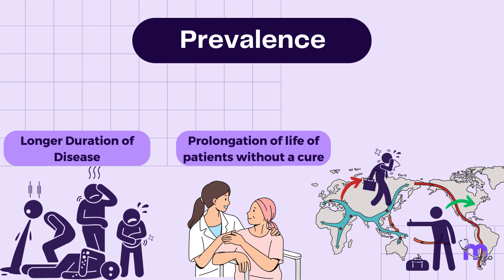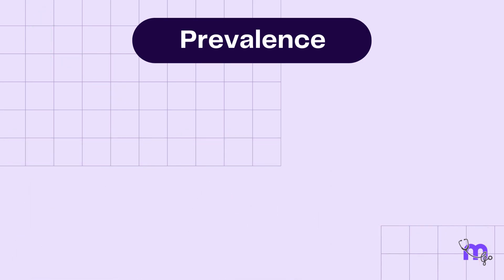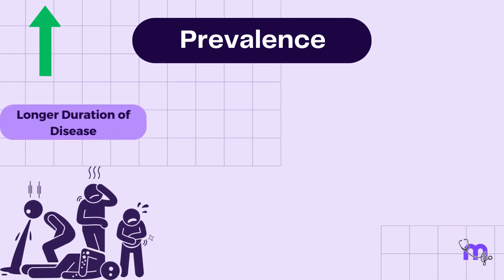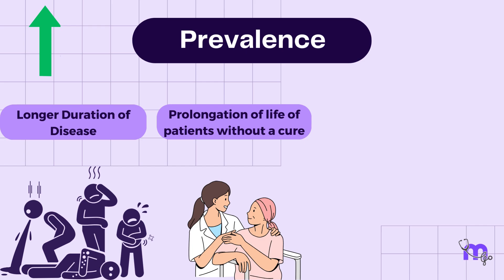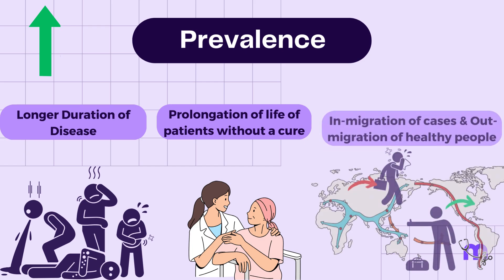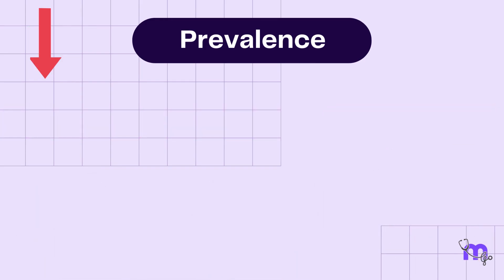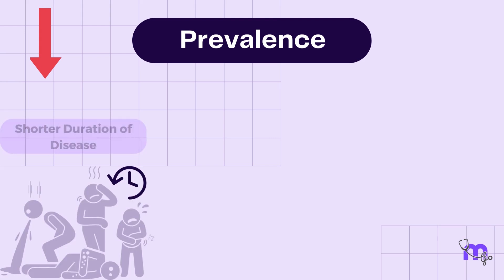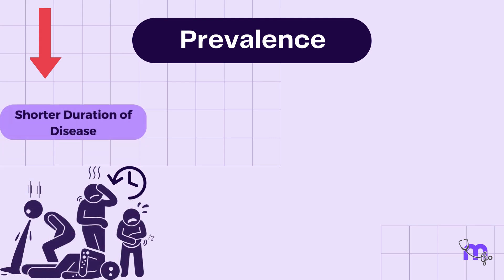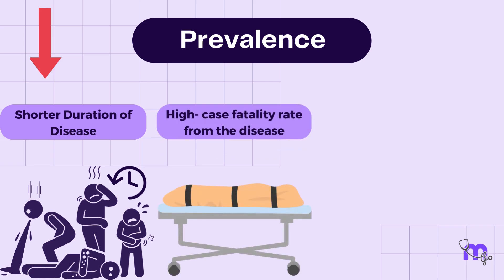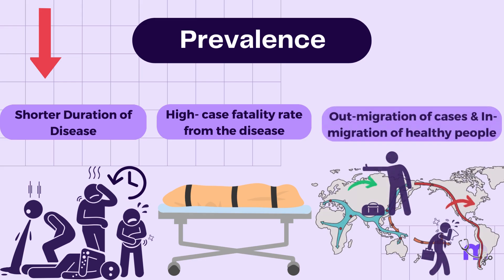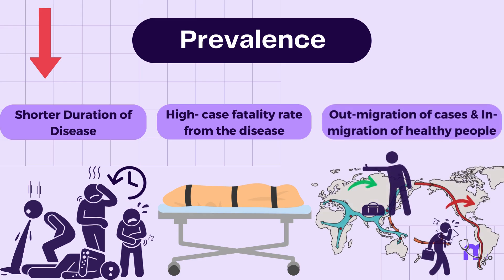Having understood these, we should know that prevalence can be increased or decreased. Prevalence can be increased in cases of longer duration of disease, prolongation of life of patients without a cure, in-migration of cases, and out-migration of healthy people. It can be decreased by shorter duration of diseases, high case fatality rate from the disease, out-migration of cases, and in-migration of healthy people.